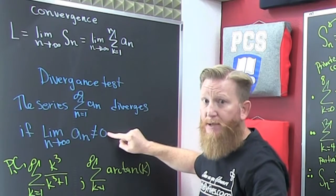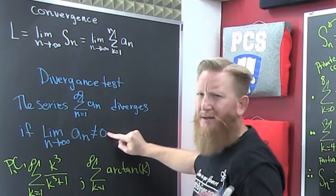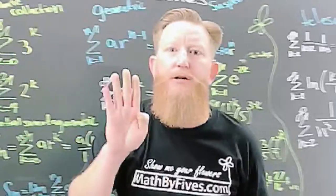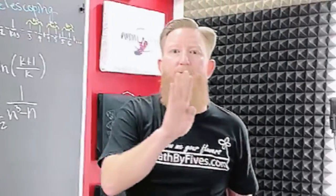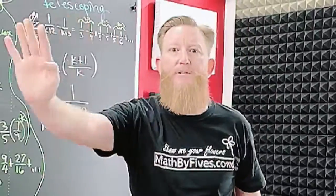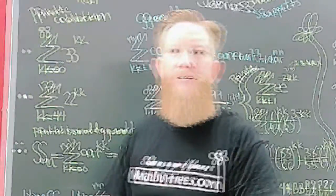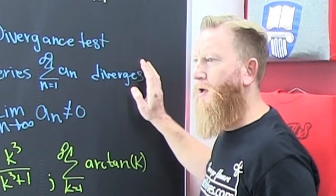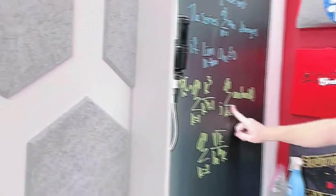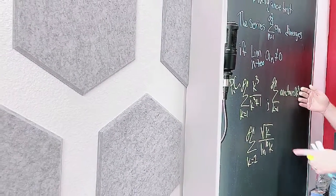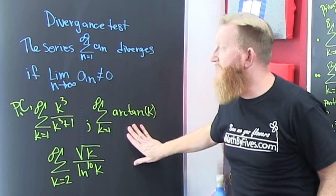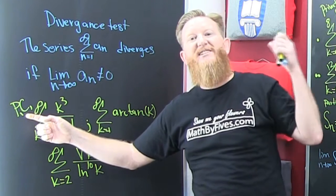It does not go both ways, people. This is only a one-way test — it only tests for divergence. You will never use the divergence test to show that something converges. You will never use the divergence test to show a series converges. Ever. Down here are three examples. Some of them not even... Here are three examples of using the divergence test, and that's all in the private collection at the end of this.